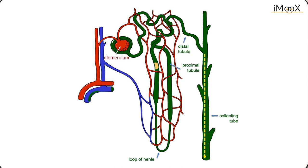In the distal loop of the tubular system of the kidney, the distal tubule, different ions are either reabsorbed or excreted selectively to maintain blood pH and the balance of electrolytes in blood.